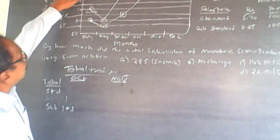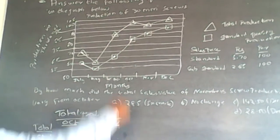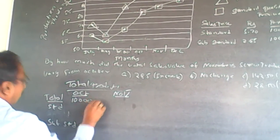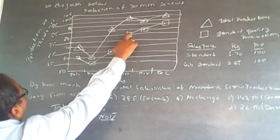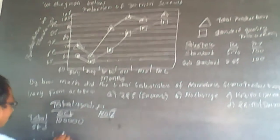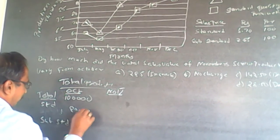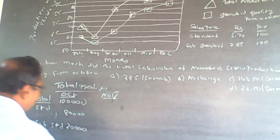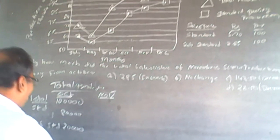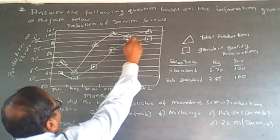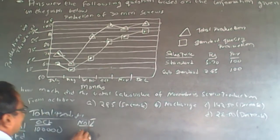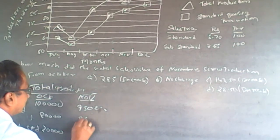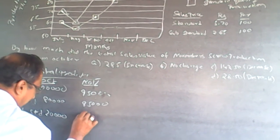The total production in October is 100,000, and the standard production is 80,000, so substandard will be 20,000. In November, the total production comes down by 5,000 to 95,000, and standard production is 85,000, so substandard becomes 10,000.